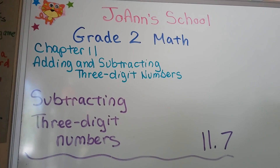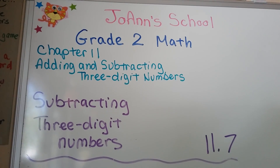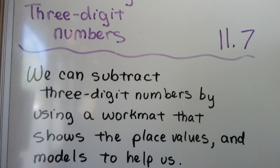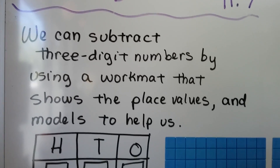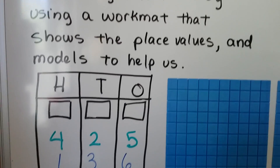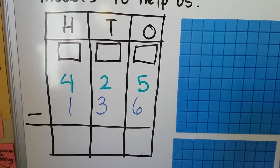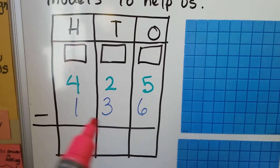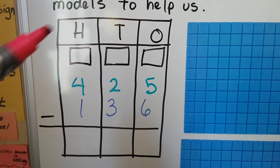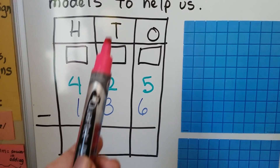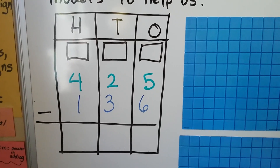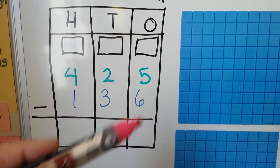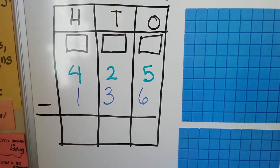We're going to be talking about subtracting three-digit numbers. This is 11.7. We can subtract three-digit numbers by using a workmat that shows the place values and models to help us. So we're going to subtract 425 minus 136. The H means hundreds, the T means tens, and the O means ones. We can keep them in the correct column, and we even have a box for regrouping.